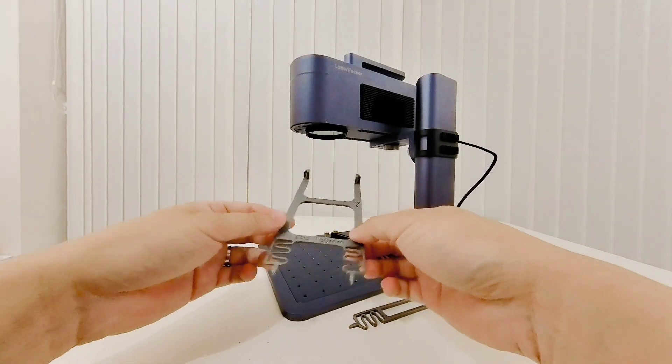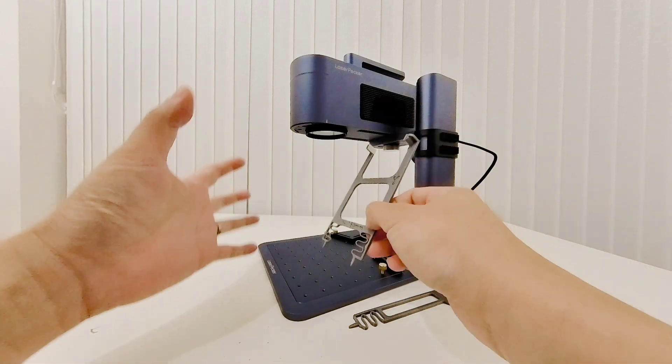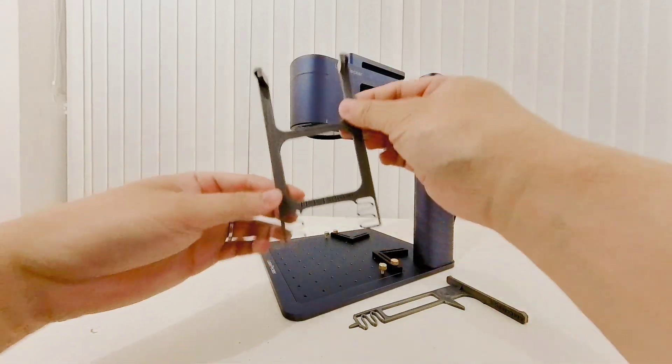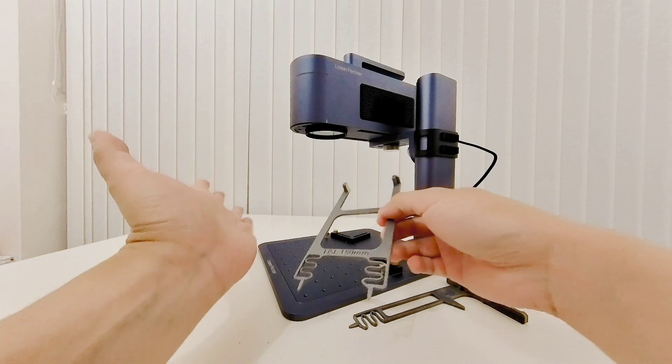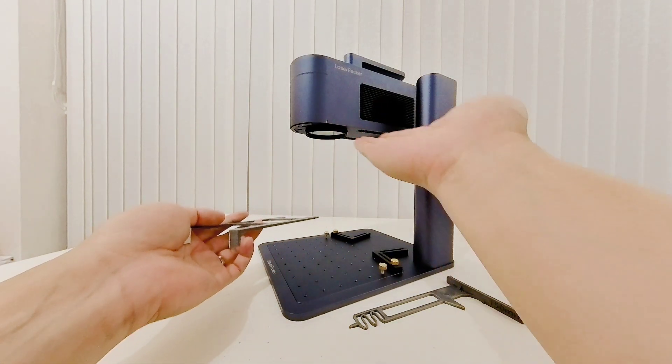This is useful for things like cylindrical objects on the rotary axis or when you tilt your engraver to engrave at an angle. You want to make sure the surface to be engraved is parallel to the bottom of your engraver so the focus is correct all over the entire engraving area.